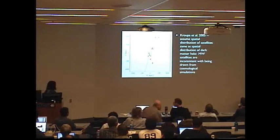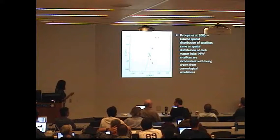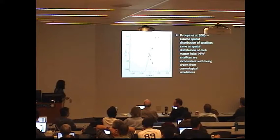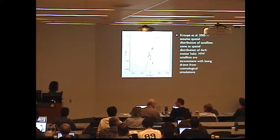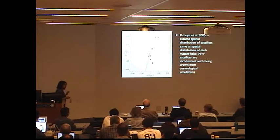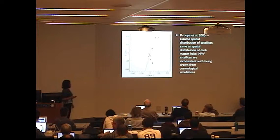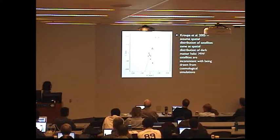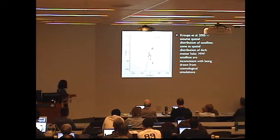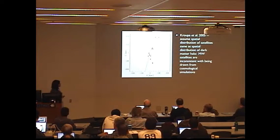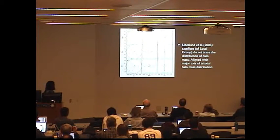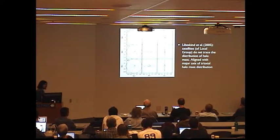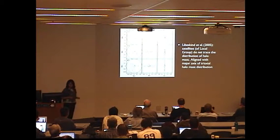Now, Krupa and others have argued that this planar structure, this is now just the classical Milky Way satellites, is inconsistent with being drawn from a parent population from cosmological simulations. The basic assumption that he makes there is that the spatial distribution of satellites is the same as the spatial distribution of mass in the dark matter halo itself. Now, various authors, including Libeskind, have pointed out that the main assumption here is flawed.